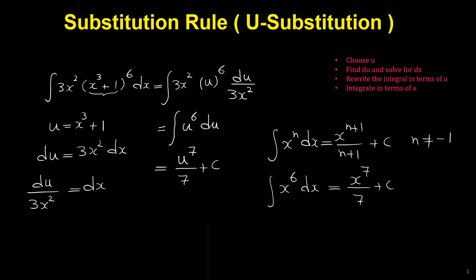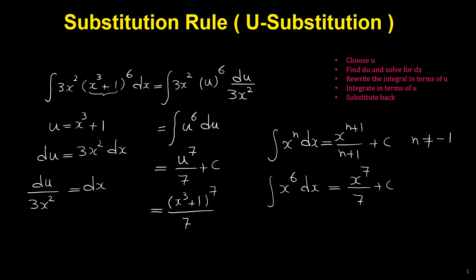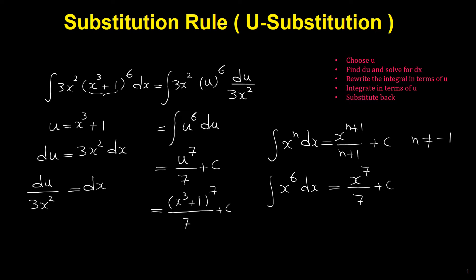After finding the integral in terms of u, we substitute back in terms of the original variable x. We replace u with x³ + 1 to get (x³ + 1) to the power of 7 over 7 plus c. So the integral of 3x² times (x³ + 1) to the 6 dx equals (x³ + 1) to the power of 7 over 7 plus c.